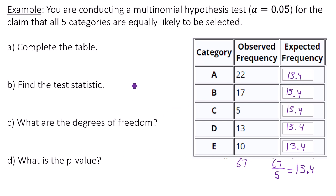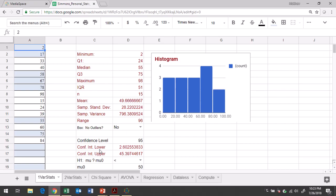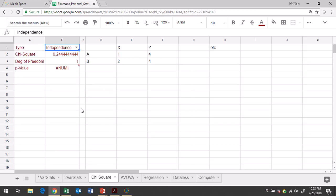Now to calculate the test statistic, degrees of freedom, and p-value, we go to Google Sheets. In Google Sheets for goodness of fit, you're going to go to the chi-square tab, choose goodness of fit from the dropdown menu, and then type in your rows and columns of data.